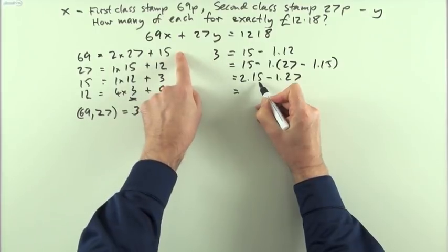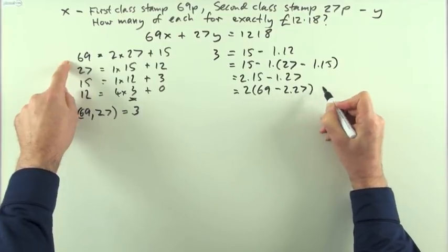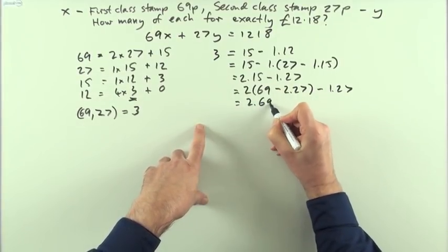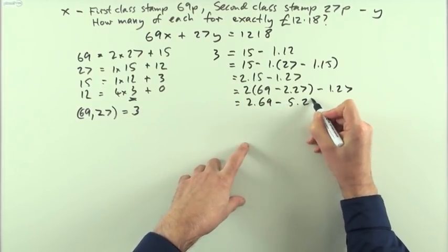Now the 15 can be written as 69 take away 2 lots of 27 minus the one lot I had already. So that's 2 lots of 69, minus 4, minus 1, minus 5 lots of 27.